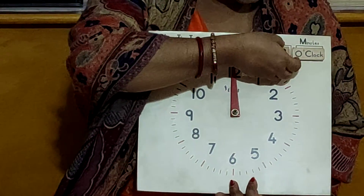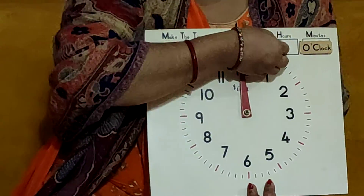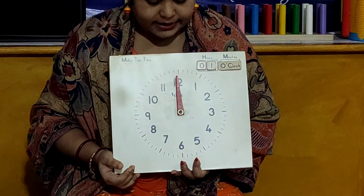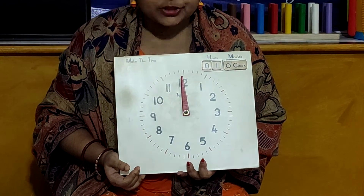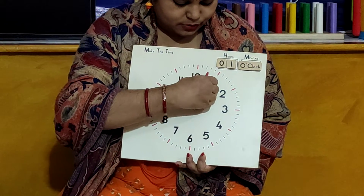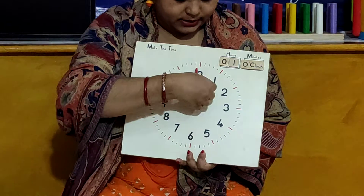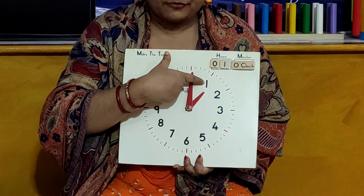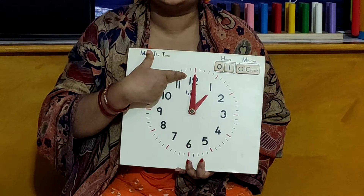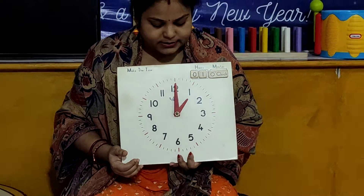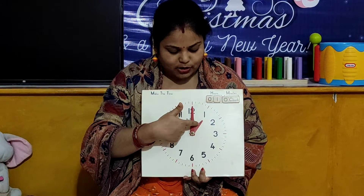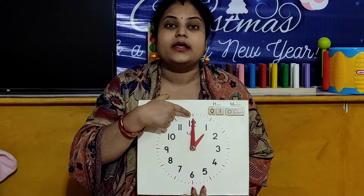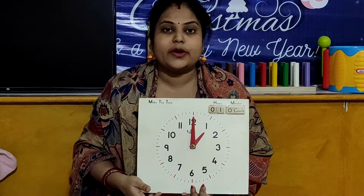And now children, we will change the time. Now our clock will show 1 o'clock. So children, at the time 1 o'clock, what is the position of these two hands? The hour hand will be on 1, and minute hand will be on number 12. So children, the clock is showing the time 1 o'clock.